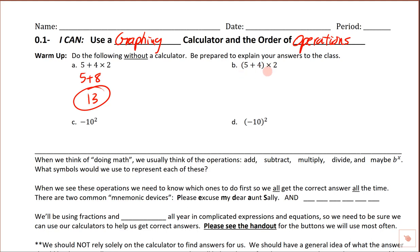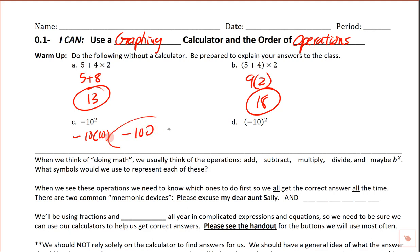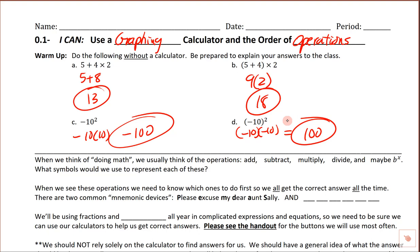Notice that we've got a set of parentheses here, so even though we have the same numbers, we do this slightly differently. We add those together first, then multiply by 2 — implied multiplication — giving us 18. For part C, negative 10 squared literally means negative 10 times 10, giving negative 100. For part D, negative 10 quantity squared means negative 10 times negative 10 — negative times negative is positive — giving positive 100.